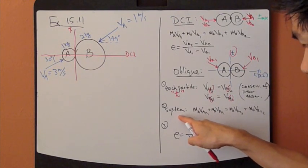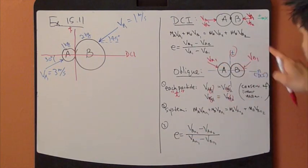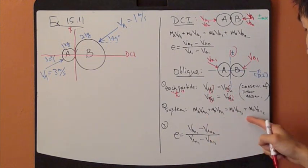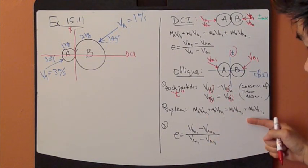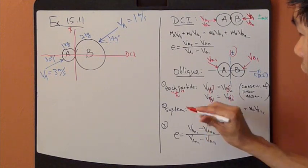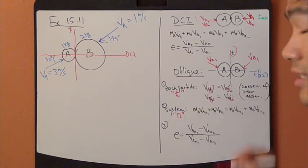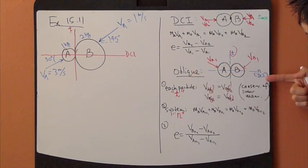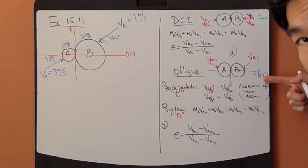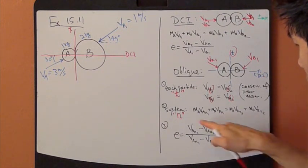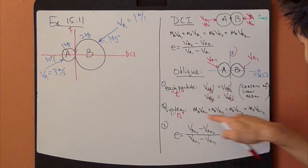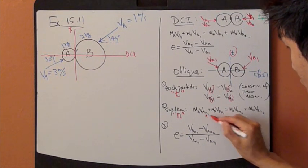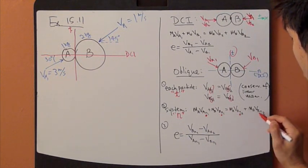Second, applying to the entire system, conservation of linear momentum applies as well. But only in the N direction, which is the impact direction. And we are going to call it the DCI direction. So this whole equation applies in the N direction. This is N, N, N, and N.